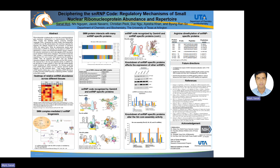I selected four specific proteins to knockdown: U2A' for U2 snRNA, NHP2L1 and PRPF4 for U4, and EFTUD2 for U5. After knockdown, I checked knockdown efficiency by Western blot analysis and then quantified their expression using Image Studio software.